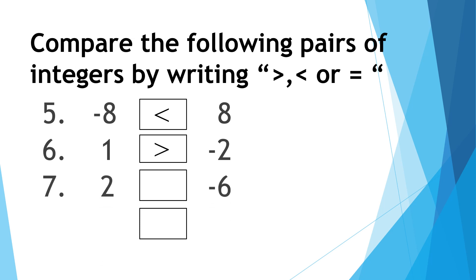Number five: negative eight and positive eight — negative eight is less than positive eight. Number six: positive one and negative two — positive one is greater than negative two. Number seven: positive two and negative six — positive two is greater than negative six. Number eight: positive five and positive five — positive five is equal to positive five.